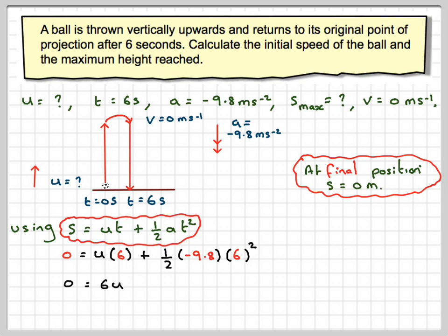So we've got 0 equals 6U, half times minus 9.8 times 6 squared is minus 176.4. So 6U will be 176.4, and therefore U will be 29.4 metres per second.